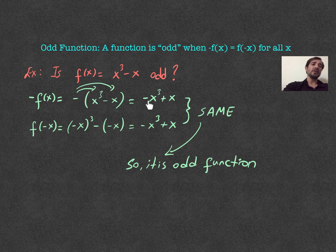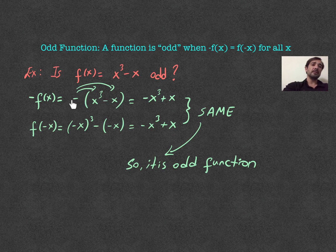And then, I'm going to distribute negative sign inside. So, negative times x power of 3 will give me negative x power of 3. Negative and negative will become positive. Okay, so that's plus x.